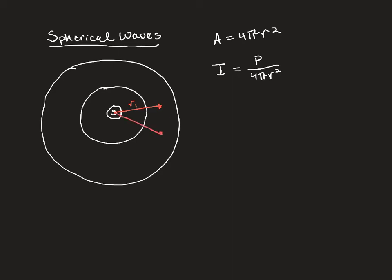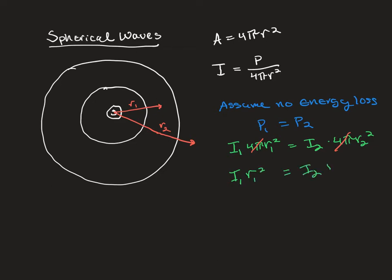Now, I can use, then, this relationship to compare the intensity at two different distances. So if I want to know the intensity at r1 and the intensity at r2, if I want to know the ratio, I can use this particular equation. So we have to make an assumption, though. We're going to assume no energy loss. This means that p1 is equal to p2. So rearranging our intensity equation, we can say intensity 1 times 4 pi r1 squared equals intensity 2 times 4 pi r2 squared. I can cancel out the 4 pi's on either side so that we get intensity 1 times r1 squared equals intensity 2 times r2 squared.